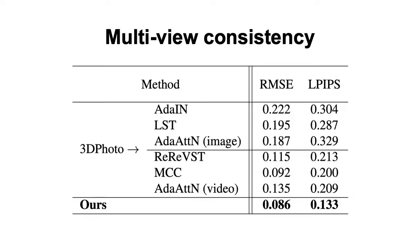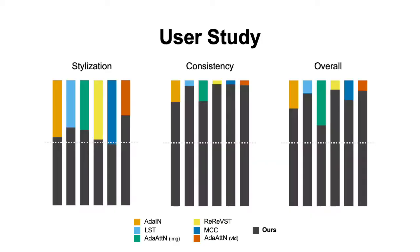We next present our quantitative results including the evaluation of multi-view consistency and a user study. We compare our method to several baselines that combine image and video stylization with 3D photo inpainting. We warp randomly selected neighboring views to a reference view and measure their similarity using root mean square error and the perceptual metric LPIPS. Our method clearly outperforms all baselines by rendering highly consistent stylized images across different views. We further conduct a user study to evaluate style quality, consistency, and overall synthesis quality. Our method demonstrates competitive style quality while producing drastically more consistent renderings and beats all baselines in terms of overall synthesis quality.